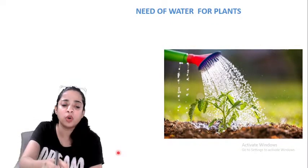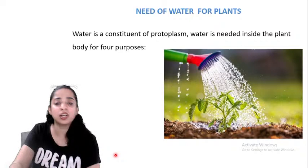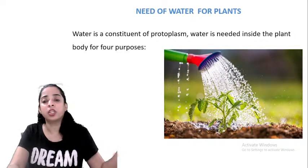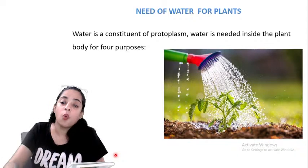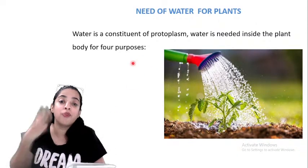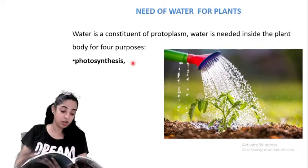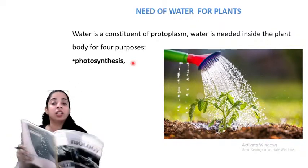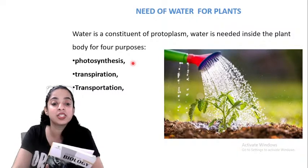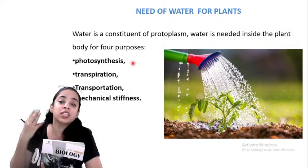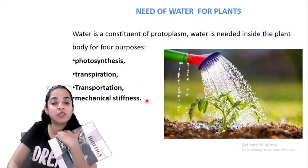Now, what is the need of water for plants? Why do plants need water? Water is a constituent of protoplasm. Water is needed inside the plant body for four purposes: photosynthesis, transpiration, transportation, and mechanical stiffness. Let us understand all four purposes in detail.